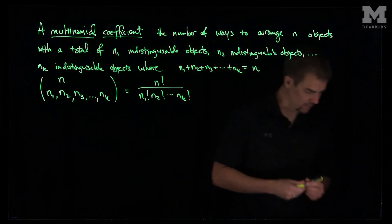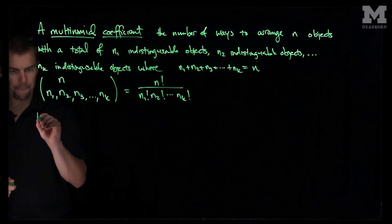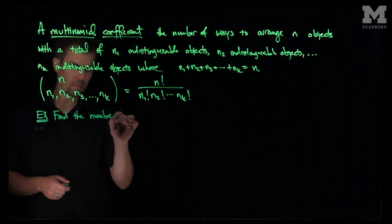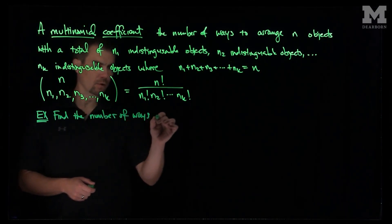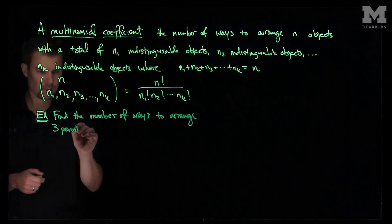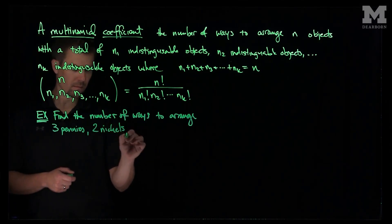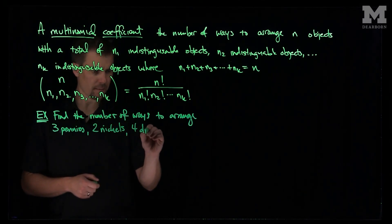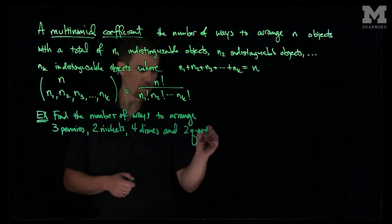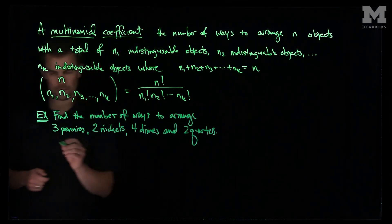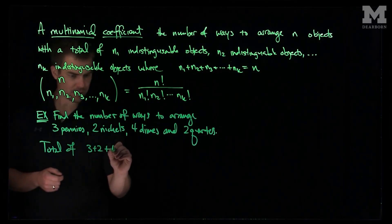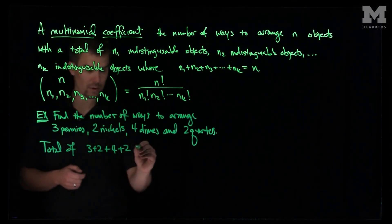Let's see an example of this before we discuss why this is true. As an example, let's find the number of ways to arrange 3 pennies, 2 nickels, 4 dimes, and 2 quarters. We have a total of 3 plus 2 plus 4 plus 2, which is 11 coins.